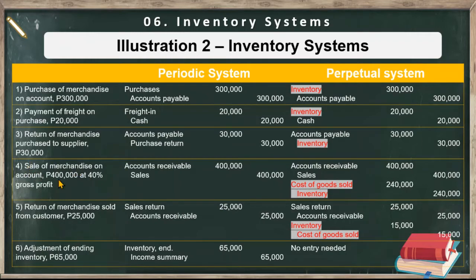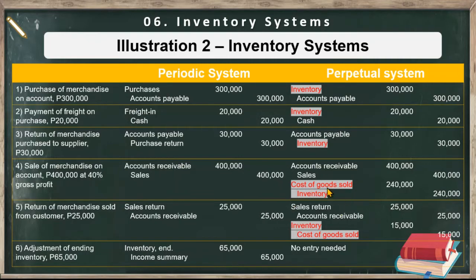There's a sale of merchandise on account for 400,000 at 40% gross profit. For the periodic system, we have debit accounts receivable and credit sales. Under the perpetual system, the same: accounts receivable and credit sales. But there's an additional entry to record the cost of goods sold. Since the gross profit is 40%, the cost ratio is 60%. So 60% of 400,000 is 240,000 — debit cost of goods sold, credit inventory, 240,000. At this point, we already know the cost of the sales is 240,000.